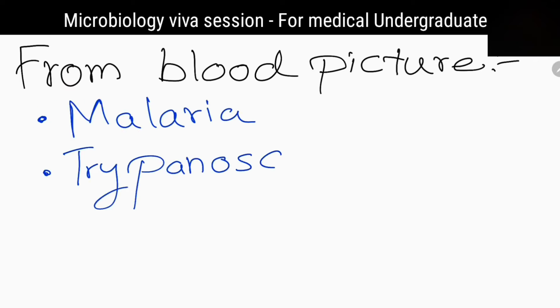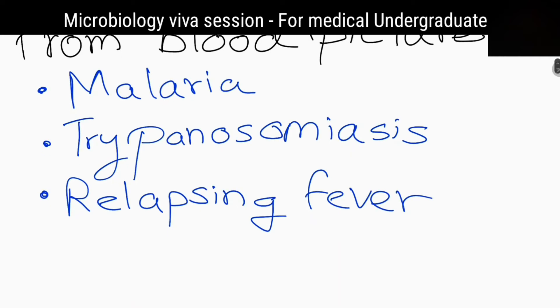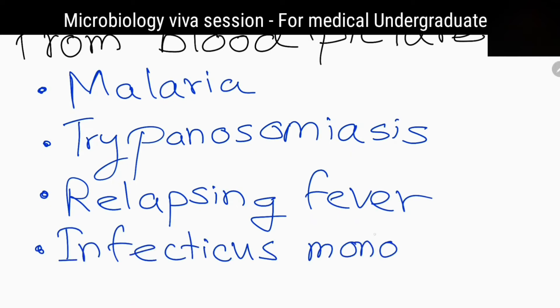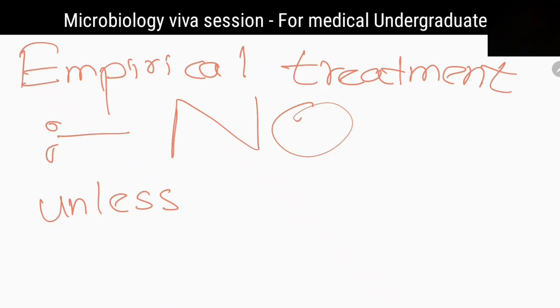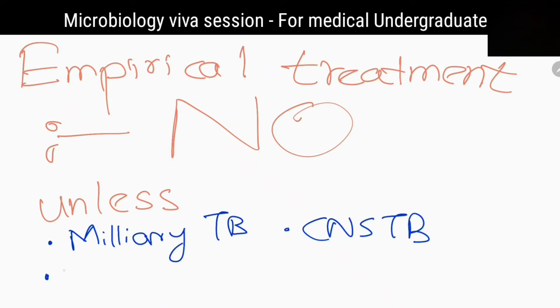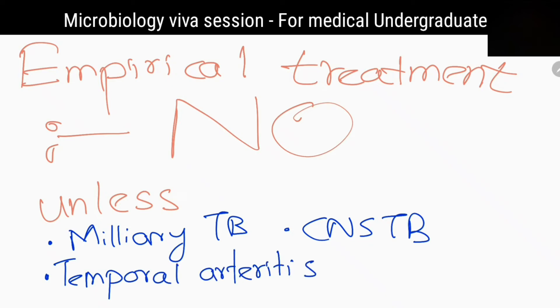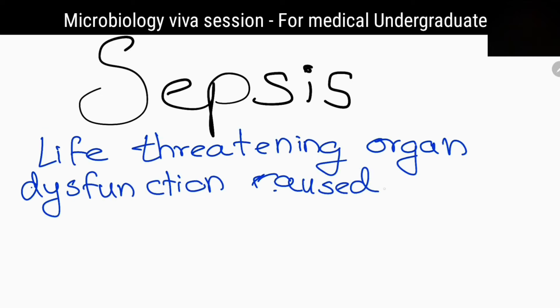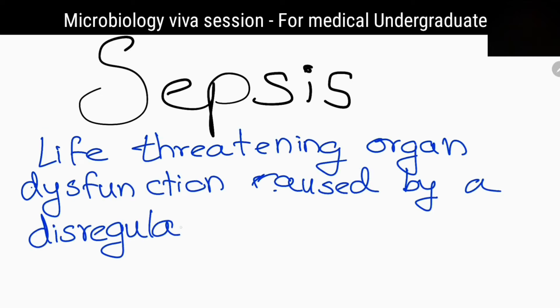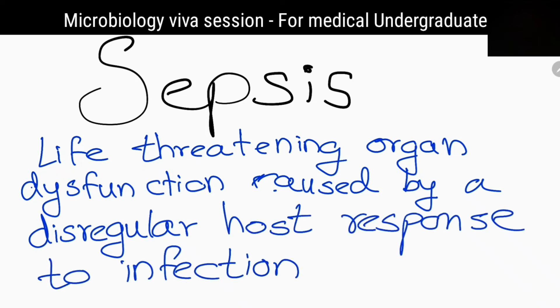Can we give empirical treatment for these patients? No, unless the patient is believed to have miliary tuberculosis, central nervous system tuberculosis, temporal arteritis, infective endocarditis, or severe sepsis. What should you rule out at the first encounter of these patients? Whether he or she is having sepsis.